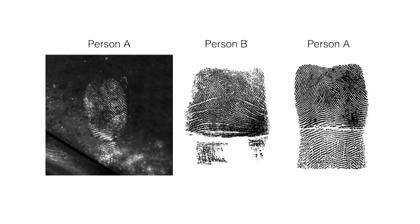With the crime scene print, often it's a partial print as well, so you only see just a little bit of it and you have to match it to a fully rolled ten-print. We can see in this figure that the print on the left is from person A, the print on the far right is also from person A, and they look pretty similar. But the print in the middle is from person B, and it looks really close to person A. It doesn't seem like all fingerprints are unique when you're looking at these examples — it's not clear cut. There's a lot of ambiguity, and when ambiguity creeps in like that, we're vulnerable to expectancy effects.